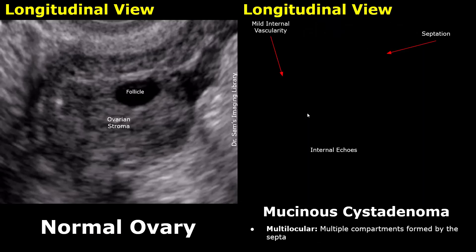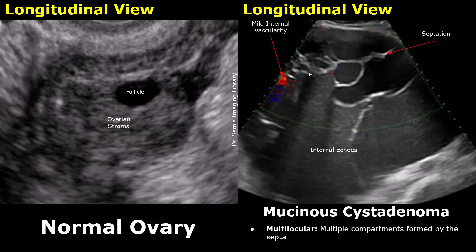This mass shows a large number of locules. These locules are closely packed together with small cystic spaces, whereas these locules are larger. You can also notice the difference in echogenicity between different locules. These two locules have somewhat medium-level internal echogenicity, whereas these locules have low-level internal echoes.